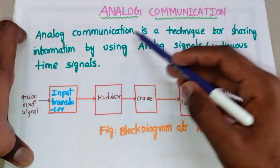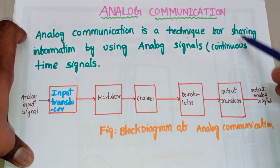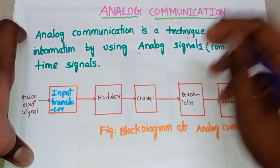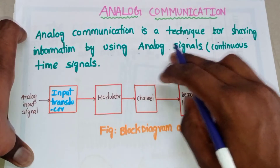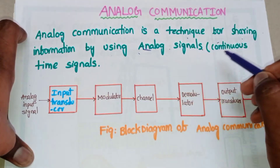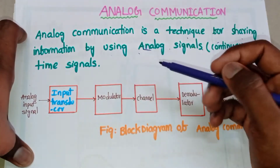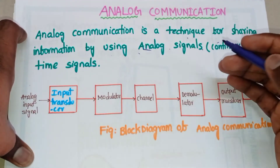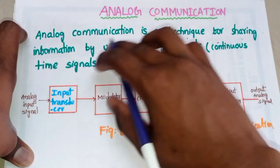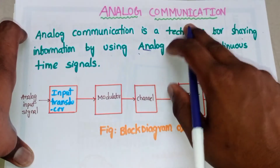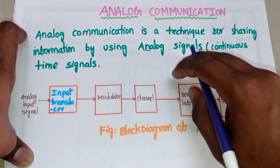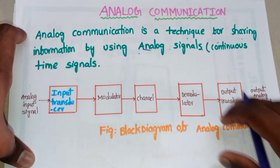Analog communication is a technique for sharing information by using analog signals. In analog communication, the information is shared by using analog signals. An analog signal is nothing but a continuous time signal — continuous time signals are also called analog signals. So analog communication is the communication technique for sharing information by using analog signals.